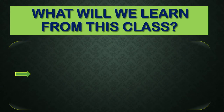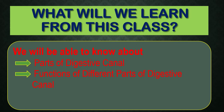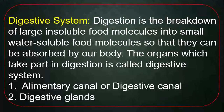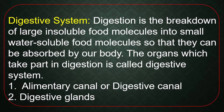What will we learn from this class? We will be able to know about parts of the digestive canal and functions of different parts of the digestive canal. Digestion is the breakdown of large insoluble food molecules into small water-soluble food molecules so that they can be absorbed by our body. The organs which take part in digestion are called the digestive system. The digestive system of the human body is mainly divided into two: number one, alimentary canal or digestive canal; number two, digestive glands.